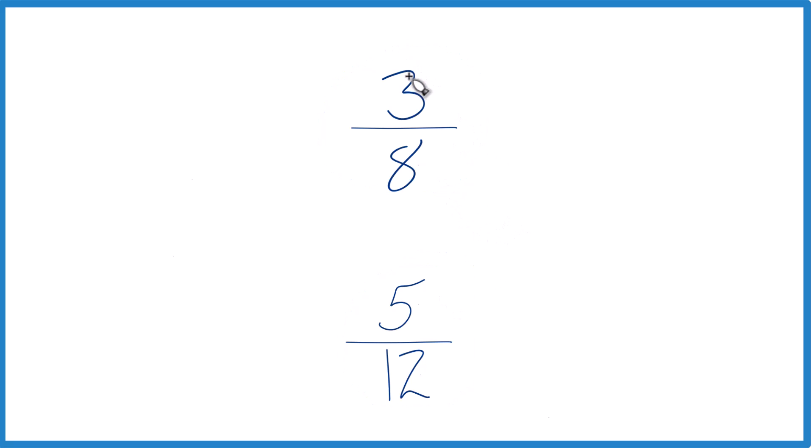You could just divide 3 by 8 on a calculator, get a decimal, divide 5 by 12, and get a decimal. Just compare the decimals. That's one way to do it. And you'd find out that 5/12 is actually the larger fraction.